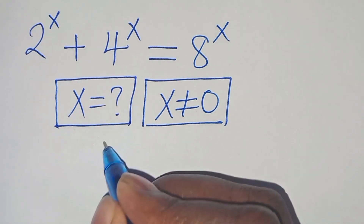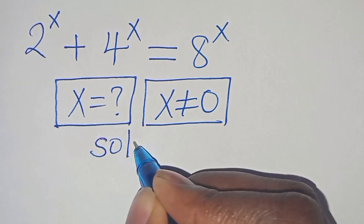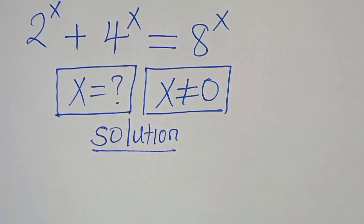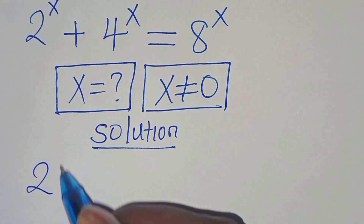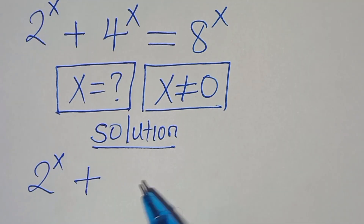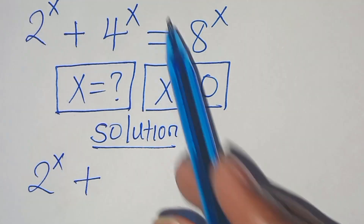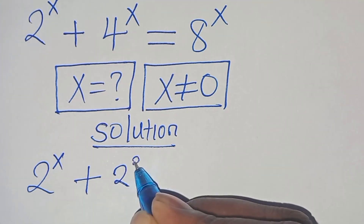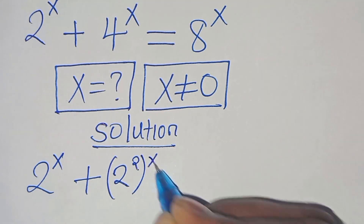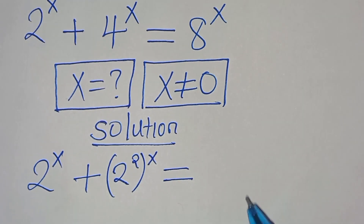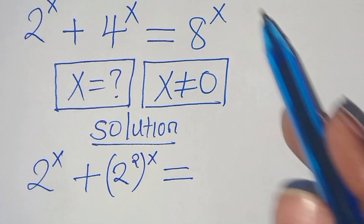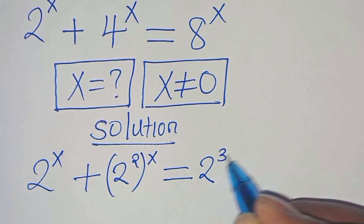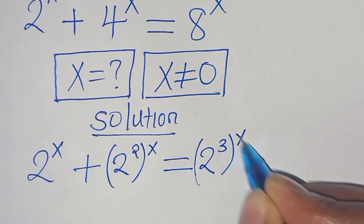Let's present the solution from here. We have 2 to the power of x plus 4 to the power of x. We can express 4 as 2 to the power of 2, raised to the power of x. This is equal to 8 to the power of x, and we can express 8 as 2 to the power of 3, raised to the power of x.